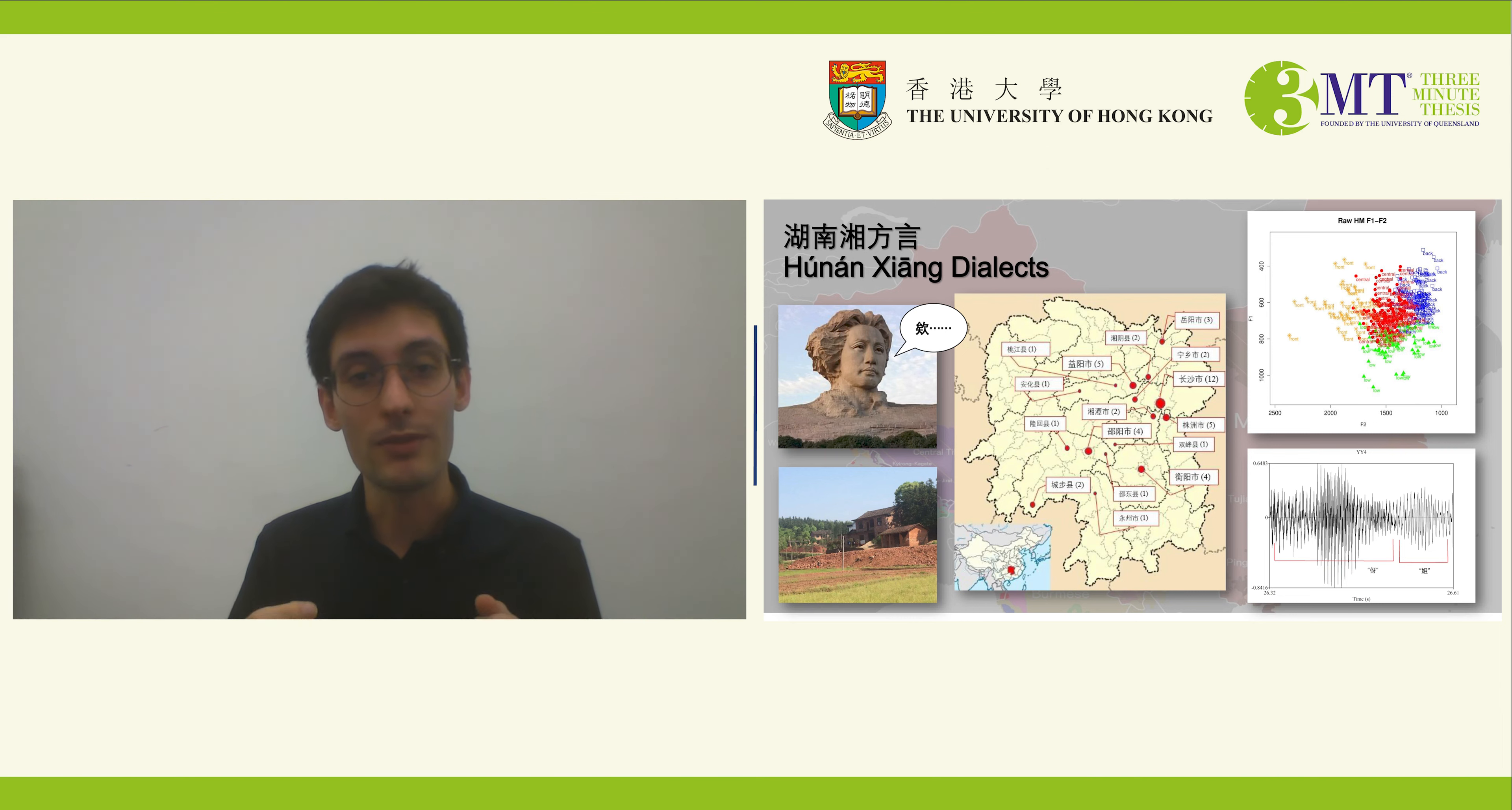And in Mandarin, the most common vowel is something like 'a', whereas in Cantonese it's something like 'a'. However, in Xiang we find that there are four different vowels that occur in hesitation markers, including these previous two.